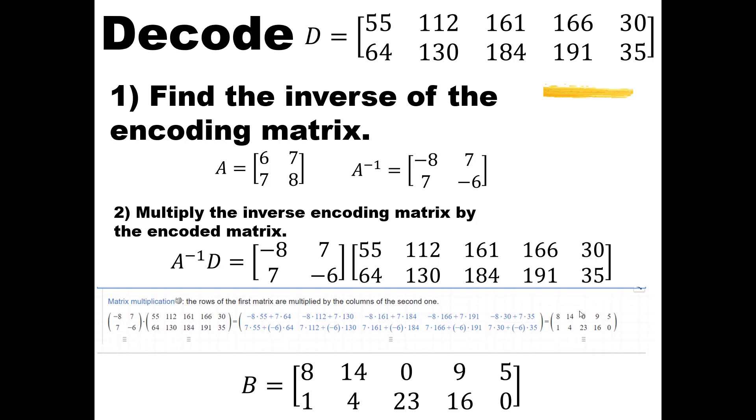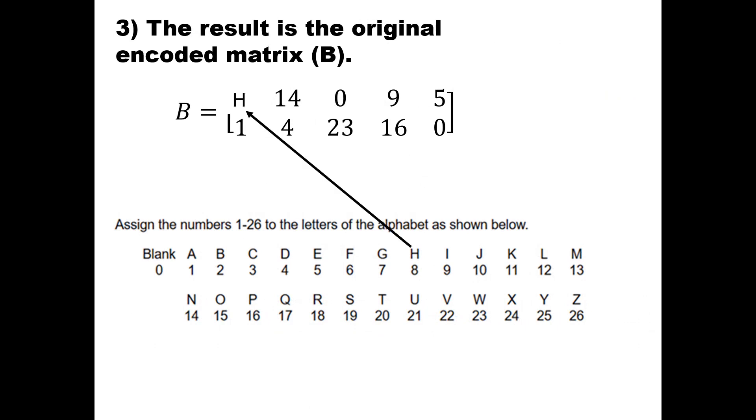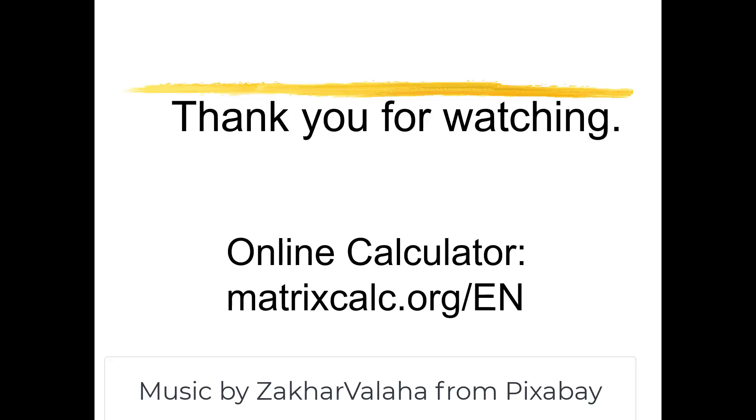The last step is to figure out what is that message: 8 is H, 1 is A, 14 is N, 4 is D, 0 is just a blank space, 23 is W, 9 is I, 16 is P, 5 is E, and 0 is a blank space. And what does it spell? Hand wipe! Oh, I guess I've got to bring hand wipes to class. Thanks for watching, and if you want to use the matrixcalc.org calculator online, here is the URL for you. Thank you.